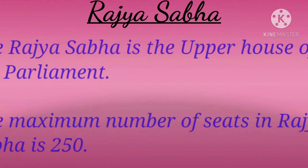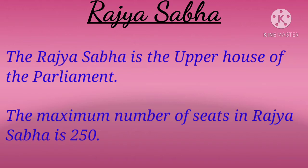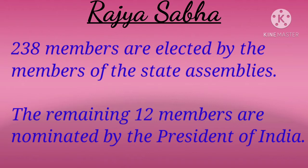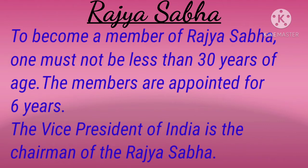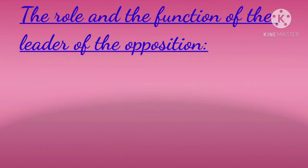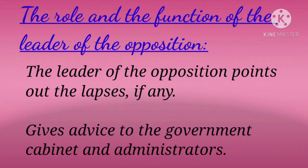Next is Rajya Sabha. The Rajya Sabha is the upper house of the Parliament. The maximum number of seats in Rajya Sabha is 250. 238 members are elected by the members of the State Assemblies, and the remaining 12 members are nominated by the President of India. To become a member of Rajya Sabha, one must not be less than 30 years of age. The members are appointed for 6 years. The Vice President of India is the Chairman of the Rajya Sabha. The Leader of the Opposition points out the lapses, if any, and gives advice to the Government Cabinet and Administrators.